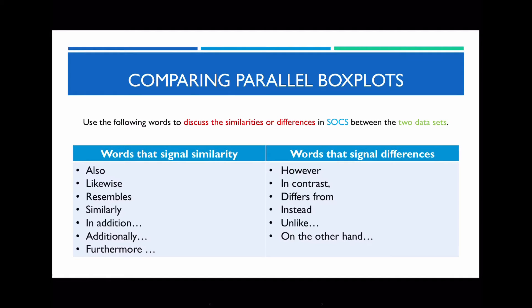When describing the differences between parallel box plots, it's important to incorporate the necessary language. When there are similarities, there are some words you may use — these are just suggestions. And on the right-hand side, these are the words that signal differences. So if they've got different shapes, centers, or spreads, these are the words you might want to use to indicate that.